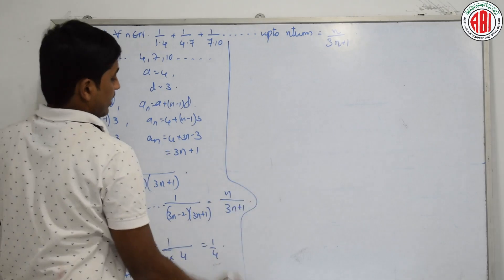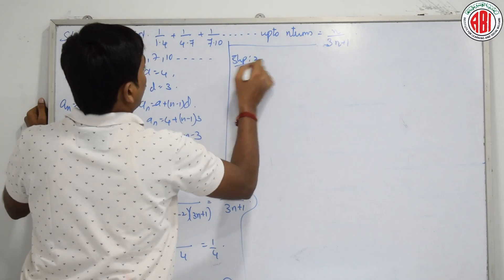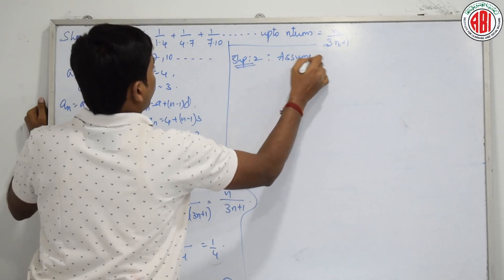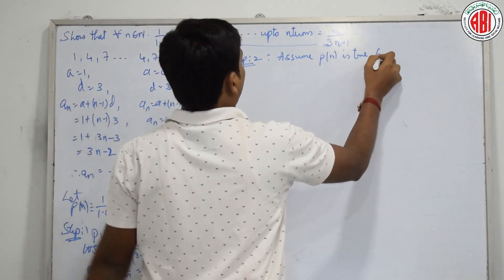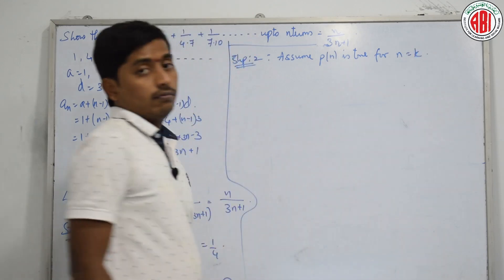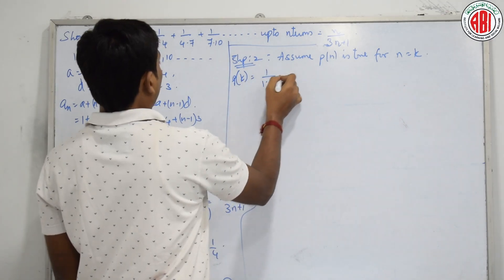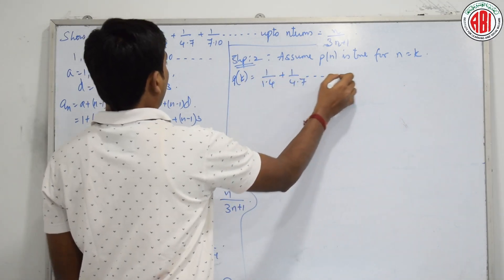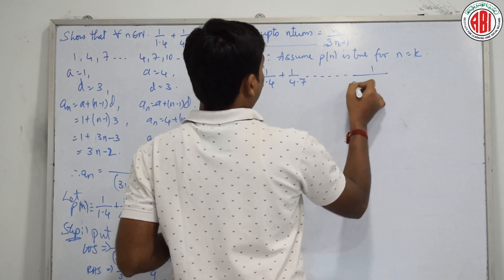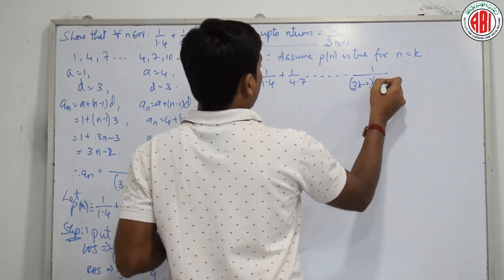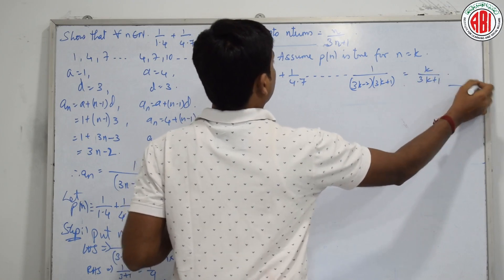Step 2: Assume P(n) is true for n equal to k. That is, P(k): 1/(1·4) + 1/(4·7) + ... + 1/((3k−2)(3k+1)) = k/(3k+1). This is our second statement.